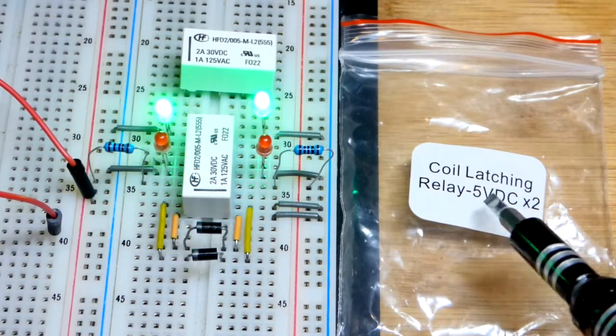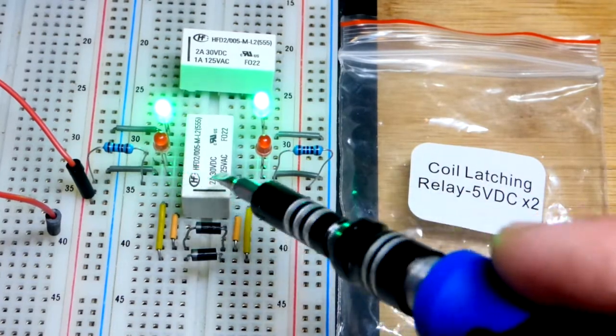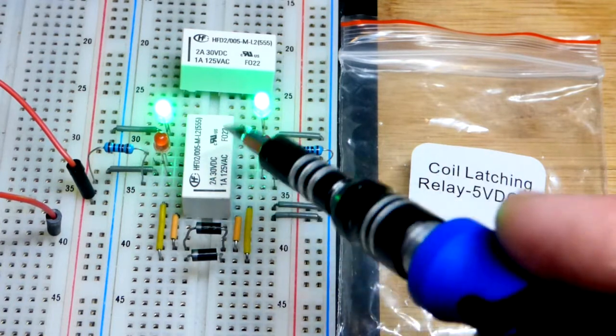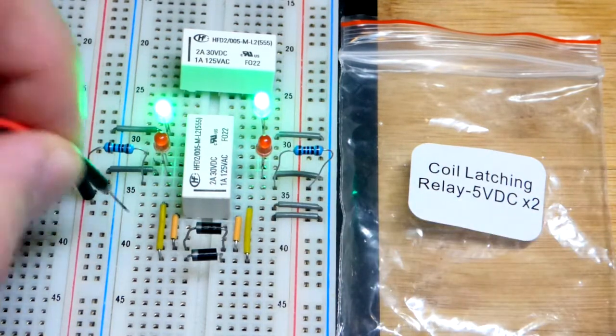So now in this video we're going to look at a latching relay. It has a couple of coils. Those coils, you put five volts across them and they switch the relay.